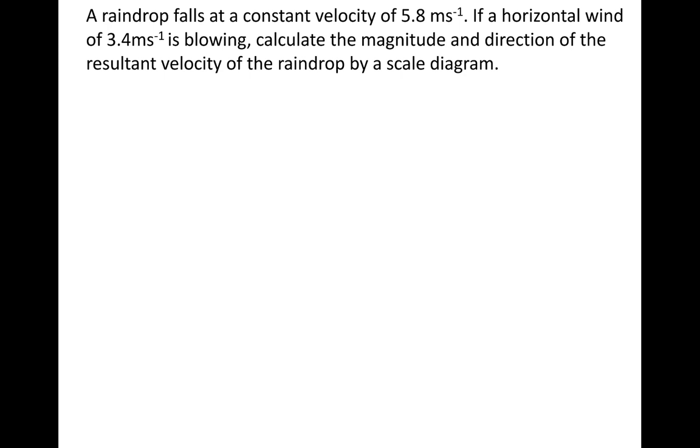So mine's not going to scale, but yours will as it will be on paper with a ruler. So horizontal wind of 3.4. So you might have a 1 centimeter to 1 meter per second. So that would be 3.4 centimeters. 3.4 meters per second. And then down 5.8 meters per second. So you should have maybe a 5.8 centimeter line. Now if you join this triangle for this resultant vector, remember the original ones are called the components and the one that we've just drawn in is the resultant vector.